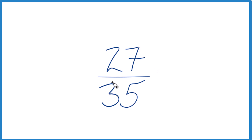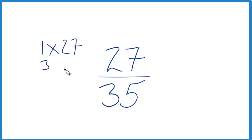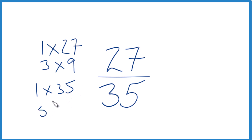So let's find the factors for 27 and 35. For 27: 1 times 27 equals 27, and 3 times 9. Those are the factors for 27. For 35: 1 times 35, and then 5 times 7. That would be it for 35.